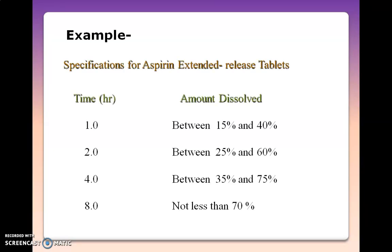For example, in the monograph of aspirin extended release tablets, the specifications are: in the first one hour, the amount dissolved must be between 15 to 40%; at two hours, between 25 to 60%; at four hours, between 35 to 75%; and after eight hours, the drug release must be more than 70%. When designing such a tablet, it must fulfill these criteria, which means the ultimate goal of designing the sustained release dosage form is achieved.